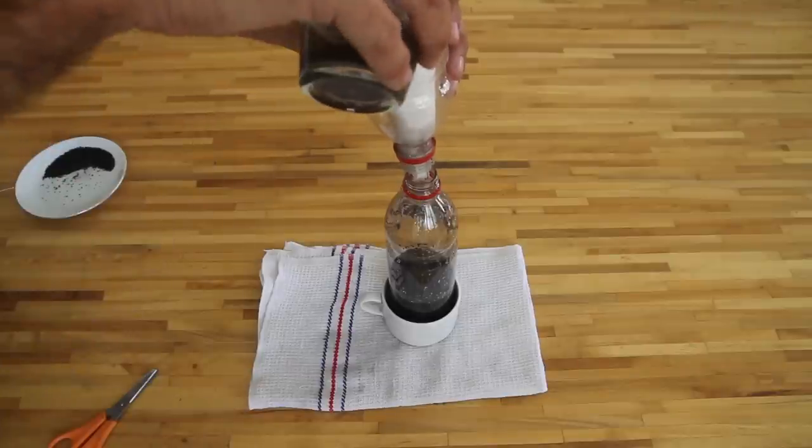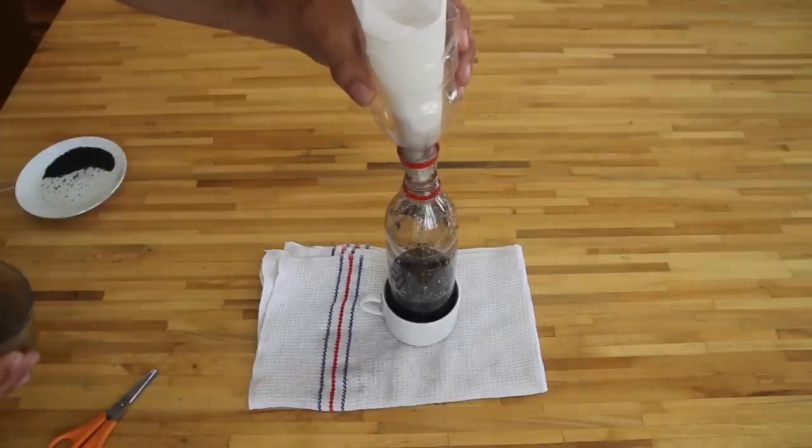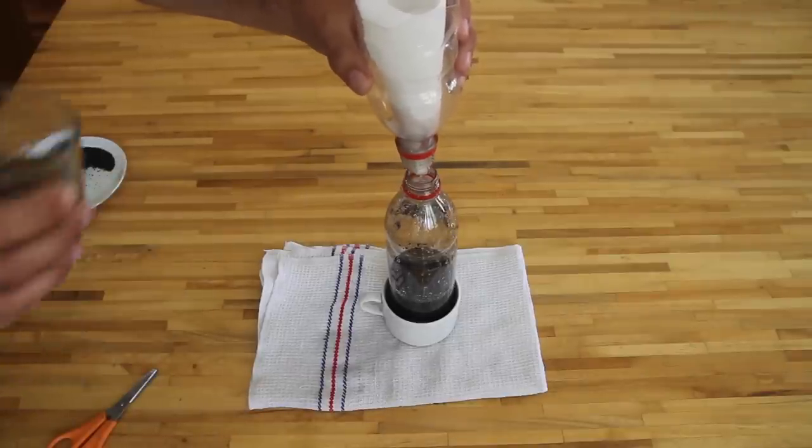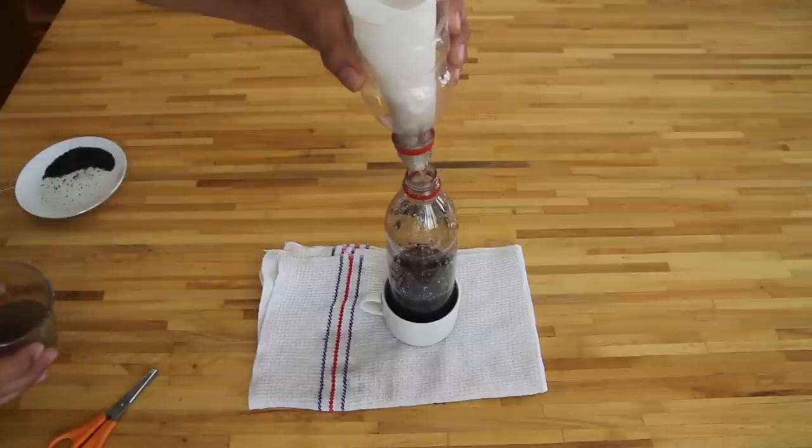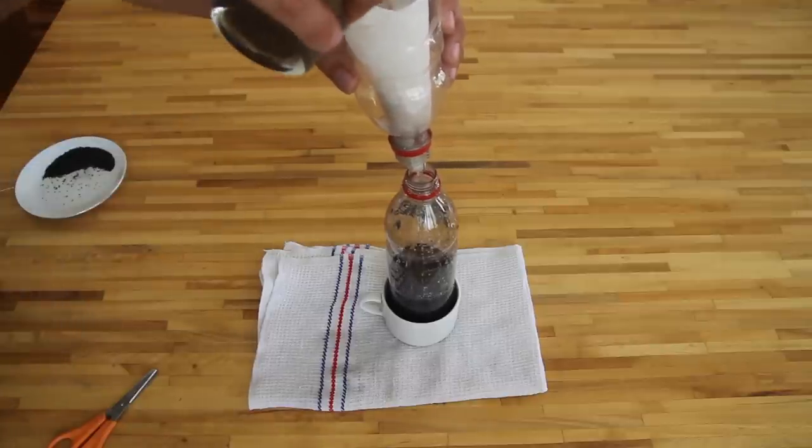You can now start pouring some of your dirty water into the bottle. The initial paper filter will retain most large pieces of dust, mud, leaves or other large particles from the water.